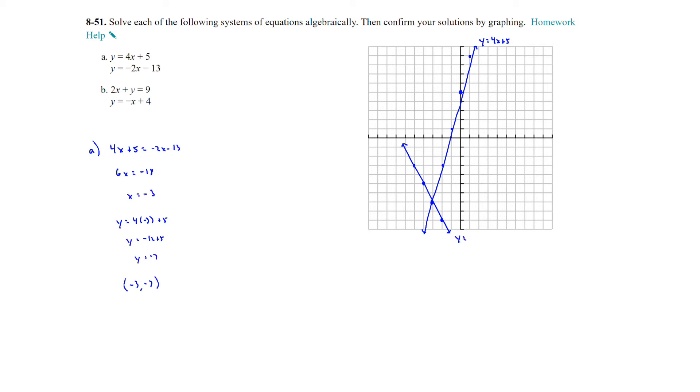And that will give me enough to graph the line. And this is the equation, y equals negative 2x minus 13. And we can see right here our solution is negative 3 comma negative 7. So we did confirm algebraically what we did get.